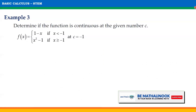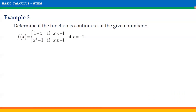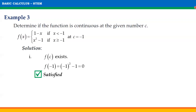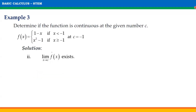Another example: determine if the function is continuous at C = −1, where f(x) = 1 − x if x < −1, and f(x) = x² − 1 if x ≥ −1. For the first condition, since C = −1, we consider the second piece: f(−1) = (−1)² − 1 = 0. Since a value is defined at C, f(C) exists and condition 1 is satisfied.